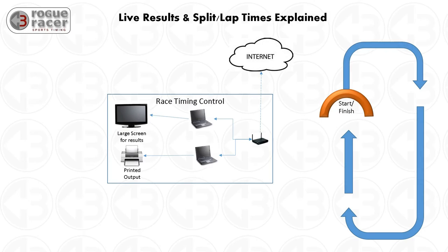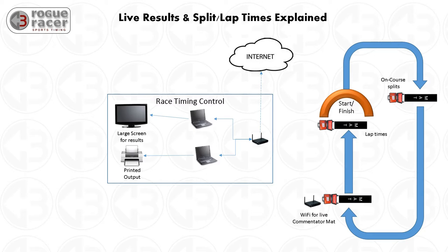On race day we will provide a race timing control with its own power and access to the internet. As agreed with you prior to the event, we will place the timing points out on the course. In this example we have an on-course mat which we will connect via mobile data, a pre-finish and pre-lap commentator mat using wifi, and a start or finish mat that is also used for lap times. These all connect back to our race timing control.